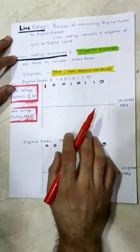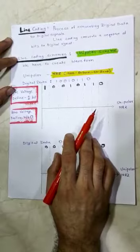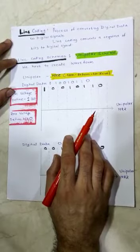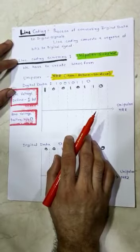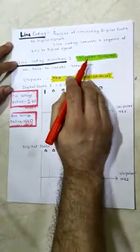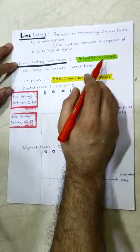In line coding scheme we have multiple schemes like unipolar, polar, bipolar, multilevel, and multitransition. Among these, we are going to learn one scheme — the unipolar scheme.